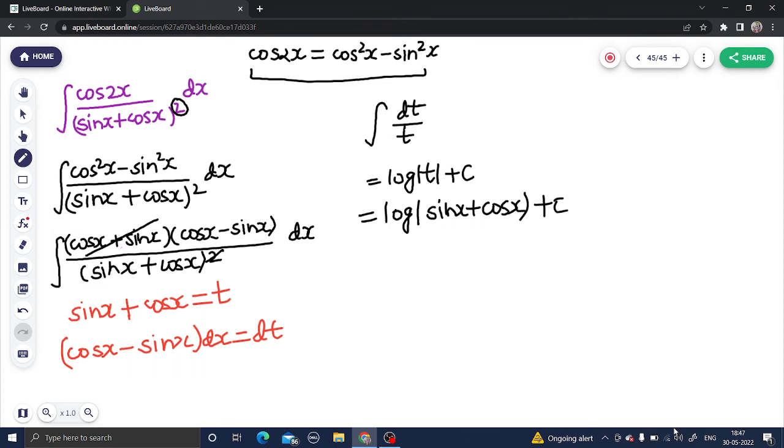I will think that okay cos 2x is there, that is cos square x minus sin square x, that is cos x plus sin x times cos x minus sin x. One power is getting cancelled, now you are getting cos x minus sin x in numerator, cos x plus sin x in denominator. Perfectly fine, take denominator as t, you will get numerator, so log of denominator will be your answer. That means log mod sin x plus cos x is going to be your final answer.